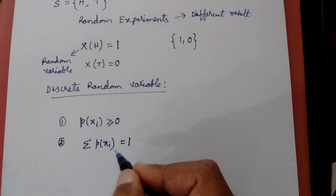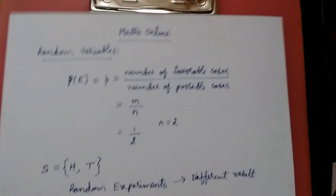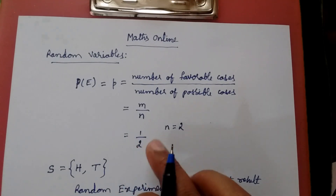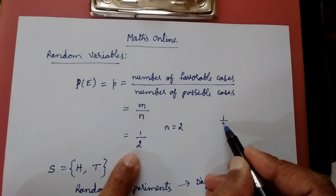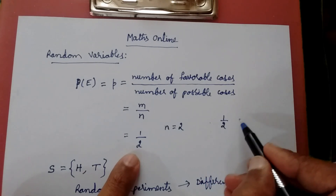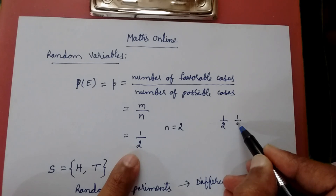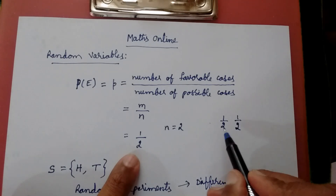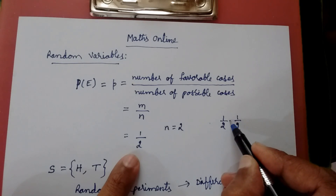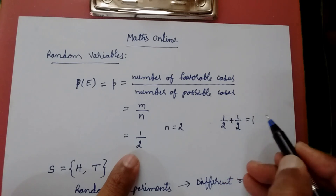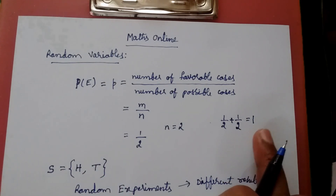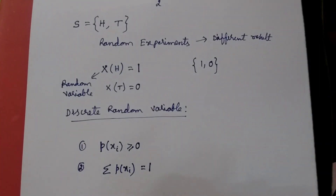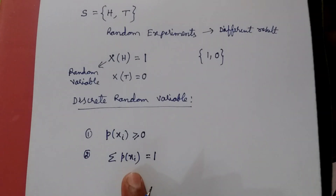Let us go back to the coin example. The probability of getting a head is 1/2 and the probability of getting a tail is also 1/2. These are the only two outcomes. If you add them: 1/2 + 1/2 = 1. So the sum of all the probabilities equals 1. This is expressed as the summation of P(xi) always being equal to 1.